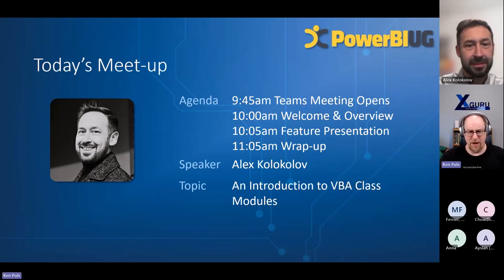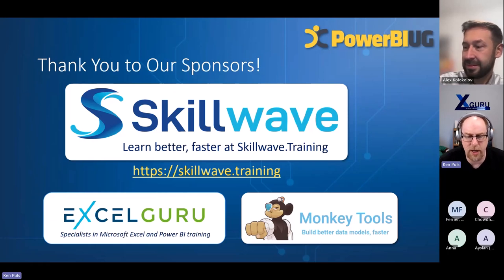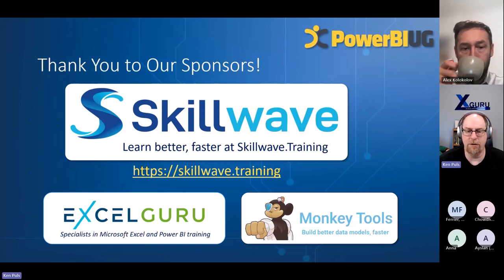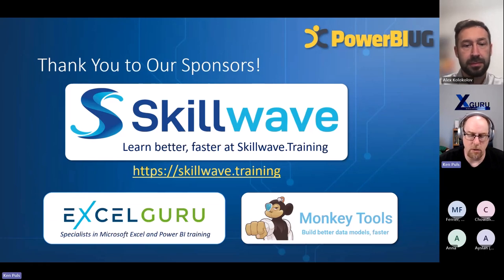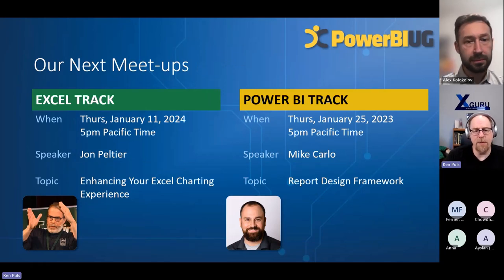Big thanks to the sponsors that make all this happen. Skill Wave is my training company, focused on teaching Power Query, Power Pivot, Power BI, and Excel. Myself and Matt Allington work hard to develop amazing content. Excel Guru is the parent company of Skill Wave, and also builds and ships Monkey Tools, an Excel add-in to help you build better data models faster.